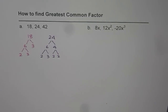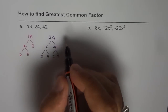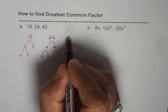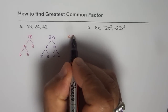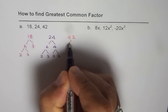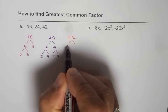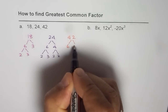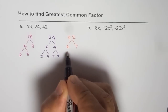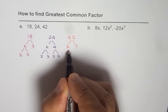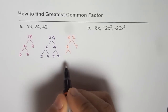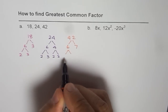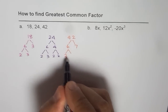Now let's do 42. 42 is 6 times 7, and the prime factors for 6 are 2 and 3.